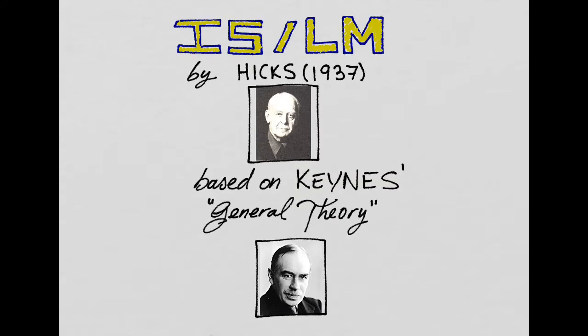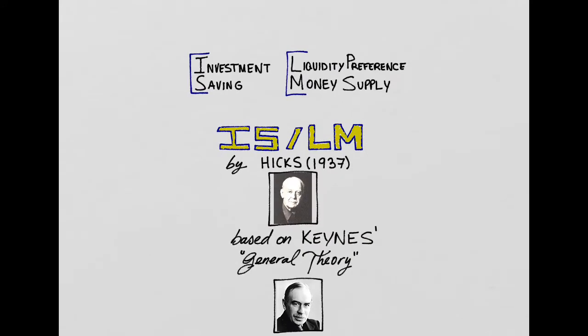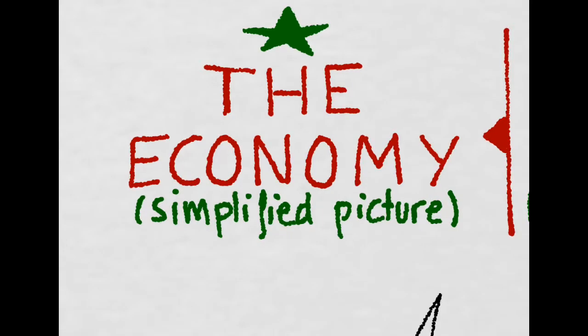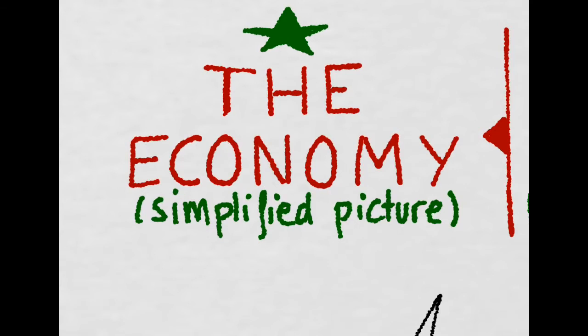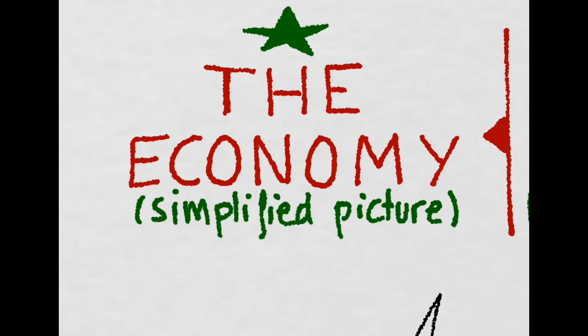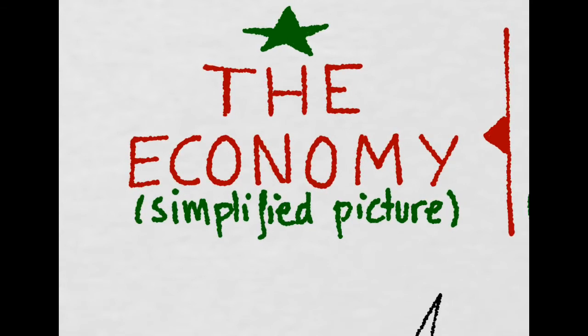IS-LM stands for Investment Savings, Liquidity Preference, and Money Supply, and throughout the video we will see why. With this basic macroeconomic model, we try to understand how the economy works using a very simplified picture of it.